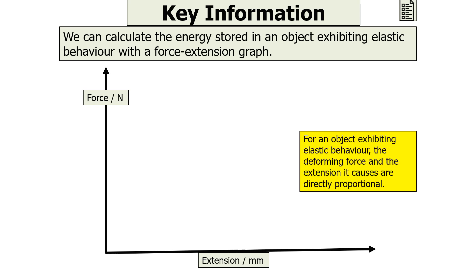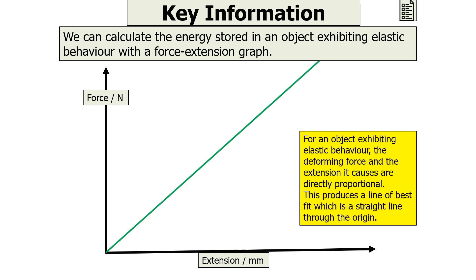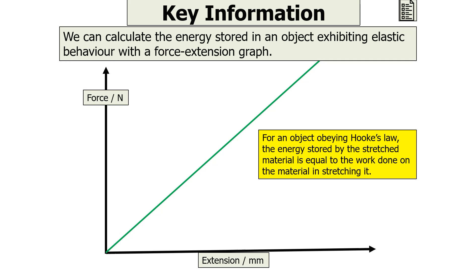For an object exhibiting elastic behaviour, the deformant force and the extension that it causes are directly proportional. This will produce a force extension graph with a line of best fit which is a straight line through the origin. For an object that obeys Hooke's Law, we can say that the energy stored by the stretched material is equal to the work done on the material stretching it, because if it's obeying Hooke's Law, it must be exhibiting elastic behaviour.